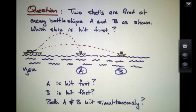As a result, Battleship A will be hit a lot later than Battleship B, even though Battleship B is a lot further away from you. It has all to do with the altitude at which the shell is going to be launched.